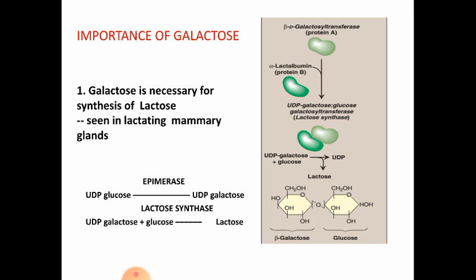Galactose is necessary for the synthesis of lactose, seen in lactating mammary glands. Lactose is the sugar present in milk. UDP glucose is converted by epimerase to form UDP galactose, and this UDP galactose, upon reacting with a glucose molecule with the help of lactose synthase enzyme, is converted into lactose.